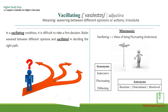'Vacillating' is an adjective meaning wavering between different options or actions, or being irresolute. Example: in a vacillating condition it's difficult to take a firm decision — Robin wavered between different options and vacillated in deciding the right path.